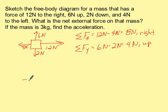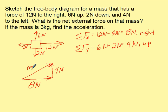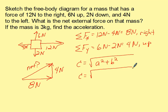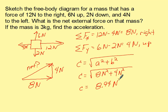Now let's sketch what that looks like. We've got a net force in the x direction of 8 newtons to the right, and a net force of 4 newtons upward. To find the net resultant force, we find the hypotenuse. Starting with our formula: c equals the square root of a squared plus b squared, so c equals the square root of 8 newtons squared plus 4 newtons squared. That gives us c equals 8.94 newtons.